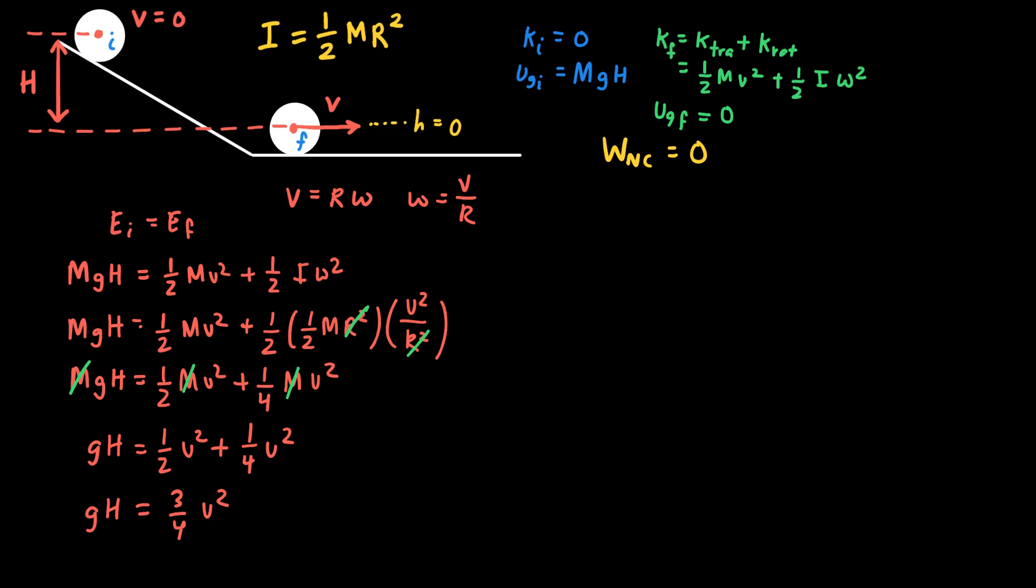And so the last thing that I need to do is I need to solve this for v. If I flip this the other way, I could write it as three-fourths v squared equals g times h. So I just need to multiply both sides by four, divide both sides by three, and then take the square root of both sides. And when I do that, I'll get v equals the square root of four gh divided by three.